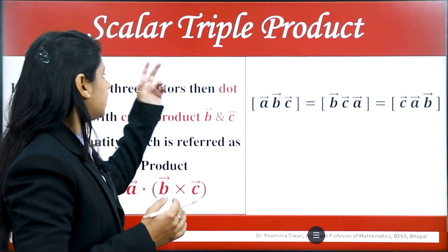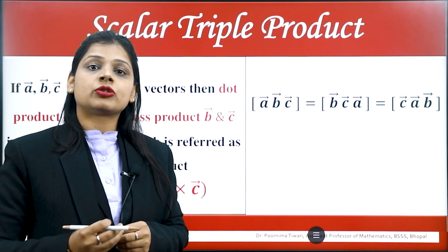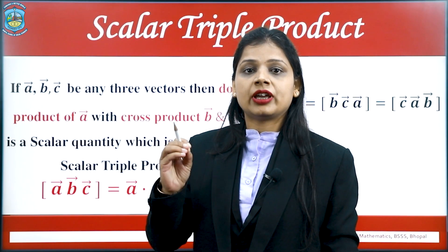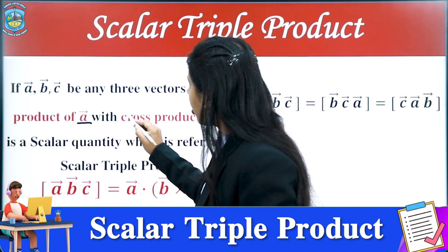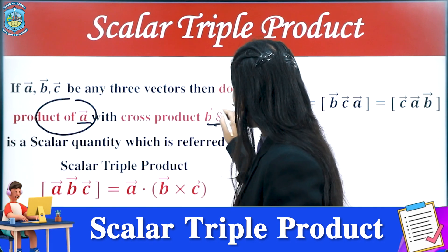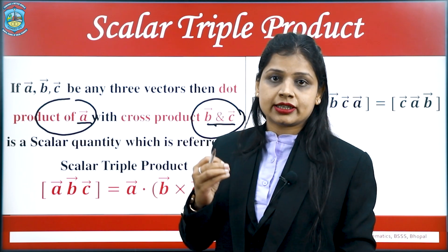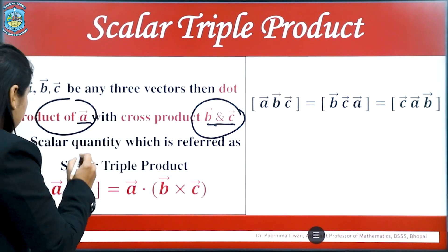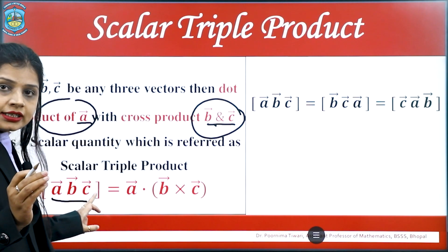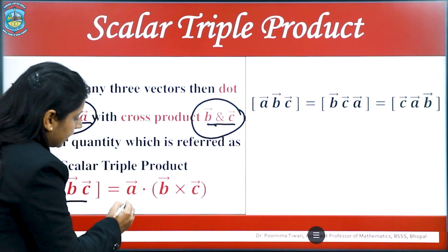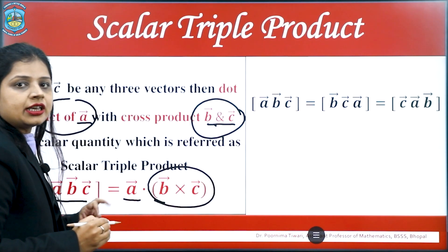Let us see the meaning of scalar triple product. It is the dot product of a vector with the cross product of two vectors. If vectors A, B, C are three given vectors, then the dot product of vector A with the cross product of B and C is a scalar quantity, which is called the scalar triple product. It is denoted by writing the vectors in a sequence within square brackets, and it equals A dot (B cross C).